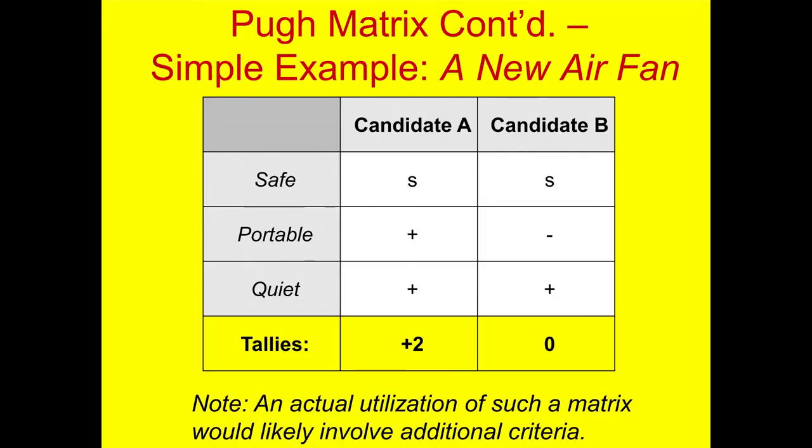Let's think about an example with a fairly simple situation. Suppose we're designing a new air fan. High-level objectives might include, for example, safe, portable, and quiet. We could rate these alongside each other in a Pugh decision matrix.